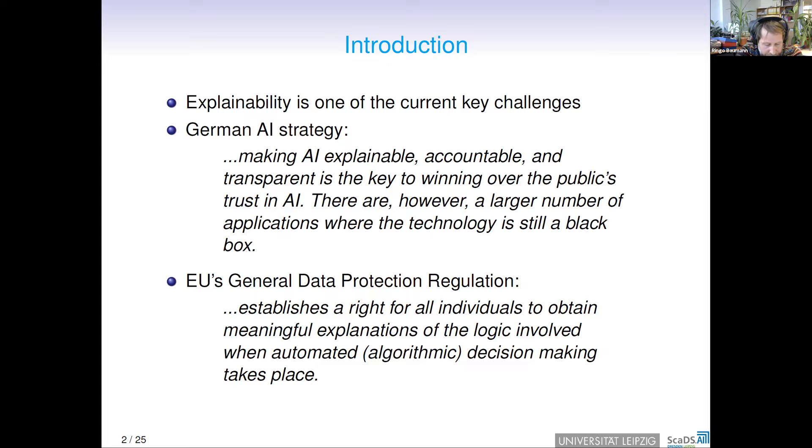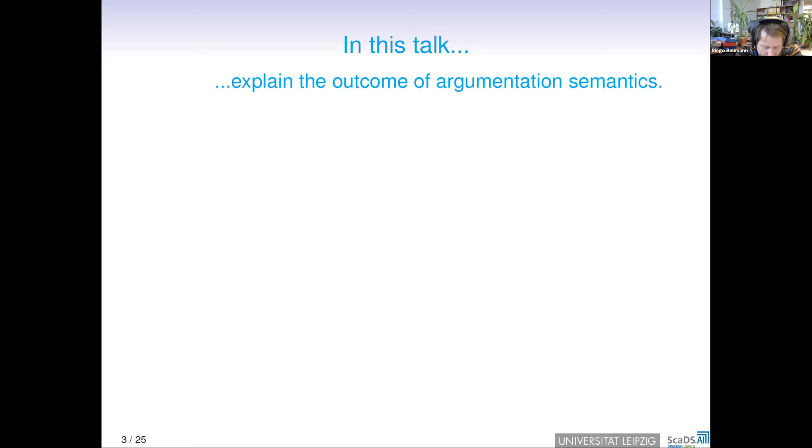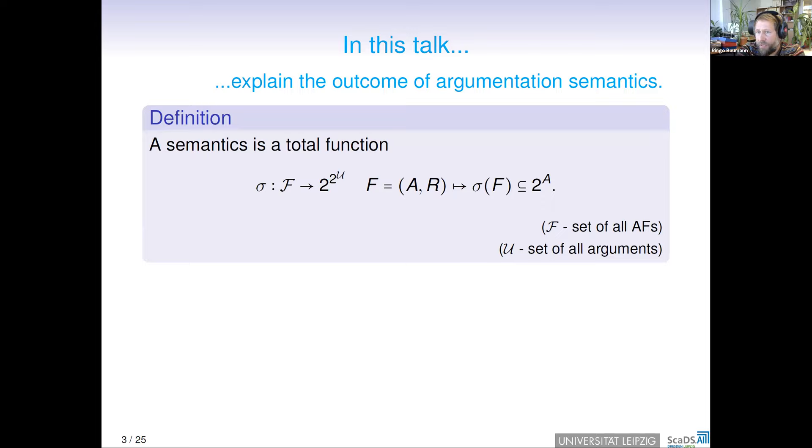The logical formulas we are considering here are abstract argumentation frameworks. More precisely, we are dealing with the question of how to explain the outcome of an argumentation semantics. So what is an argumentation semantics? You can see here the definition. This is just a total function which takes as input a so-called argumentation framework, which is a directed graph where the nodes are interpreted as arguments and the edges are interpreted as attacks. The outcome is a set of sets of arguments, so-called extensions. These extensions can be seen as reasonable positions, as sets which are strong enough to withstand the other arguments, given the current argumentation scenario.